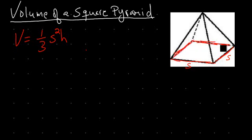Volume is always going to involve the area of the base times the height. When the shape isn't changing as it rises — that is, it stays consistent — it's simply the area of the base times the height. That one-third accounts for the fact that the pyramid changes its shape as it rises.